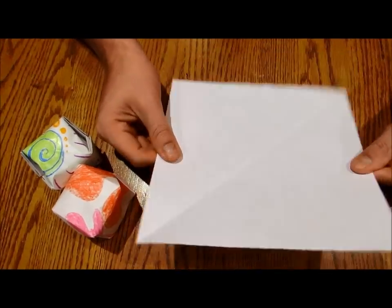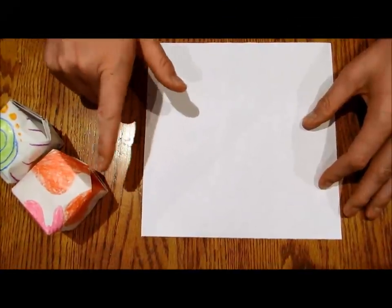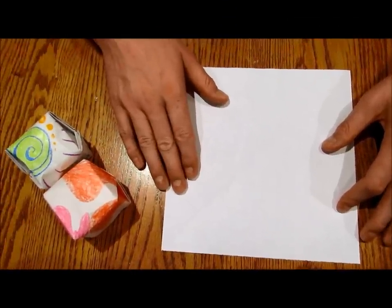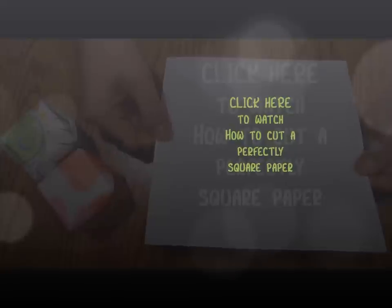First you're going to take your white or any color piece of paper. Usually we like to color them. In fact, it'll actually make the paper hold water better if you color it all over because the wax makes it more waterproof. You want to have a perfectly square piece of paper.